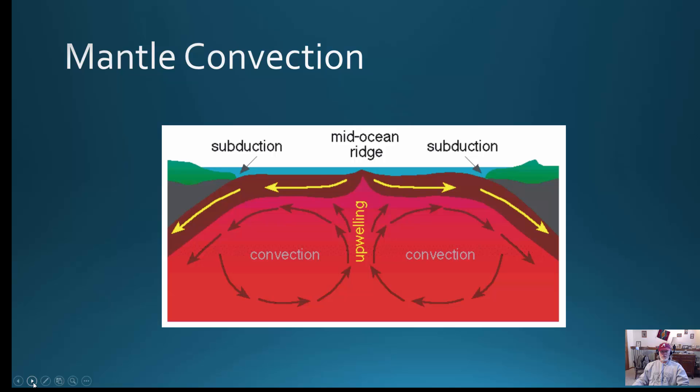As you can see from the diagram, where this material can actually break through the lithosphere of the Earth's crust, we have a mid-ocean ridge where crust is being formed. In other places, it will pull the crust down at subduction boundaries, where crust is going to be destroyed. You have this continual cycle of the Earth's crust.